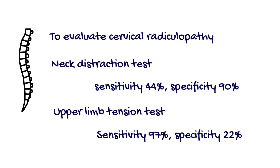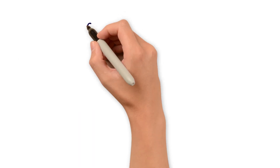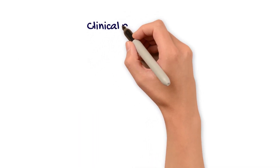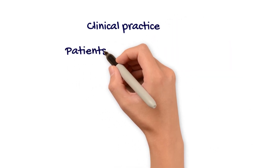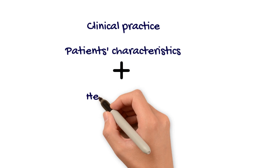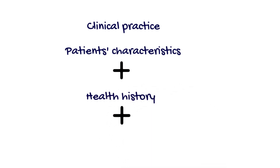In summary, if the neck distraction test is negative and the upper limb tension test is also negative, we can be confident to rule out cervical radiculopathy. From this example, we can see that there are no perfect tests. A combination of patient characteristics, health history information, and diagnostic tests are needed to more accurately determine the presence or absence of a condition.